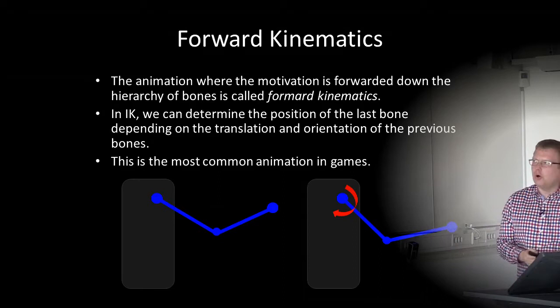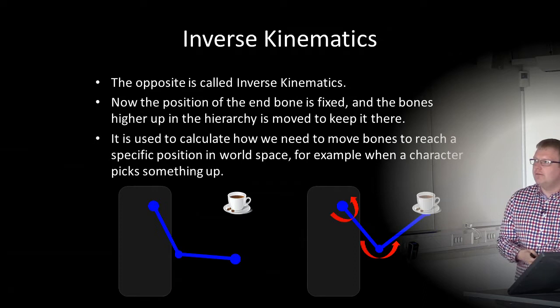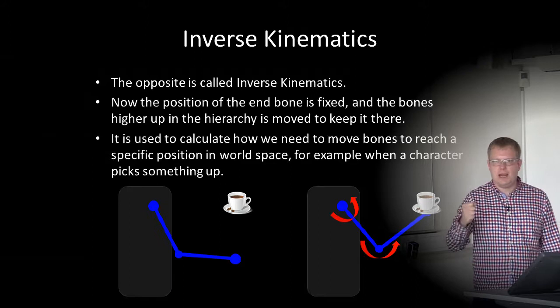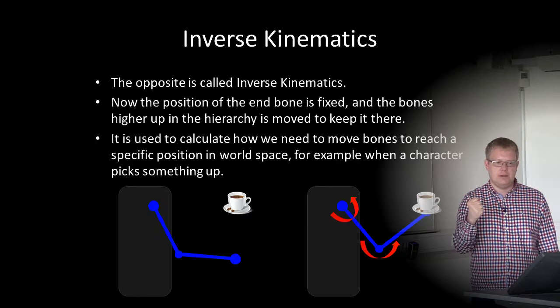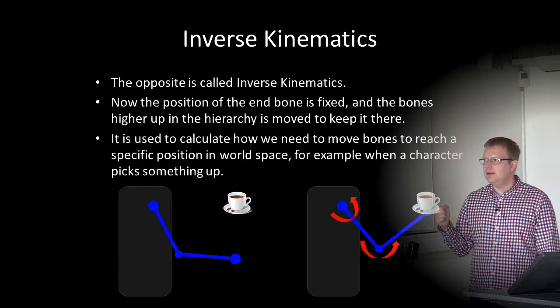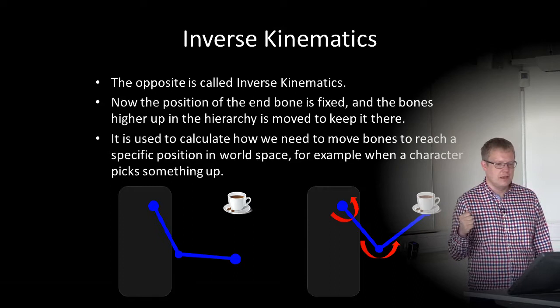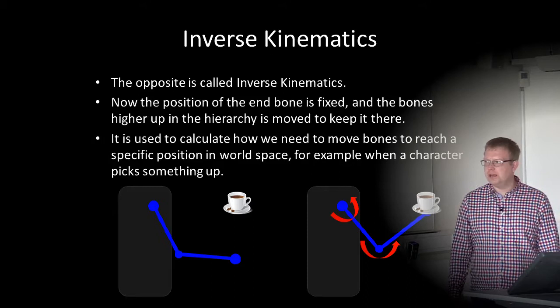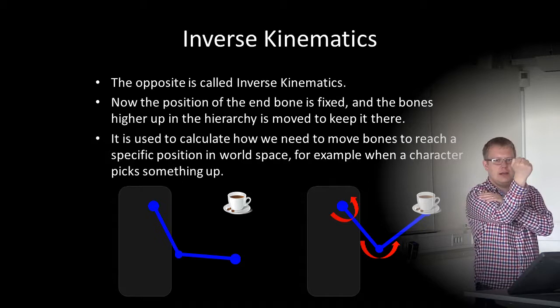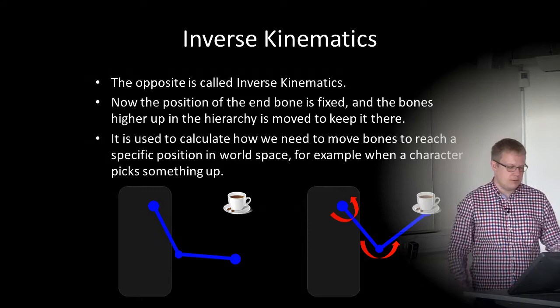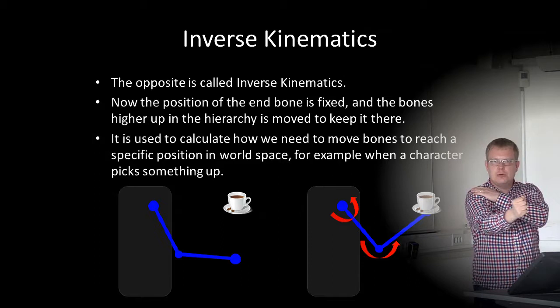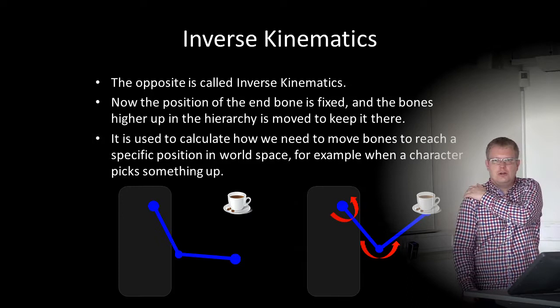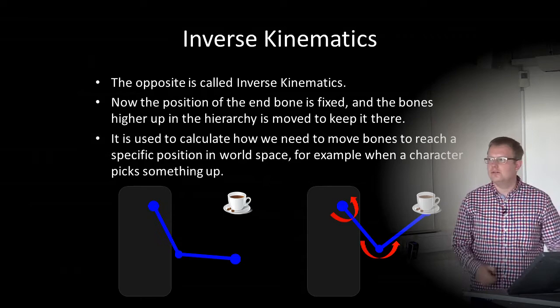Forward kinematics is the most common animation in games. We move one joint, for example the shoulder, and calculate where the other child bones have their final position. In inverse kinematics, we know the end position of a bone — for example the hand — and the bones higher up in the hierarchy are moved to keep the end position fixed. It's used to calculate how we need to move bones to reach a specific position in world space, for example when a character picks something up.